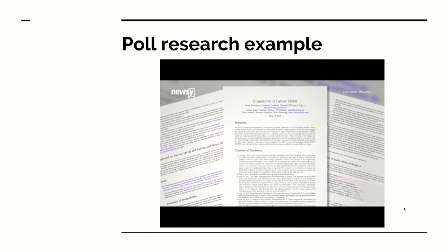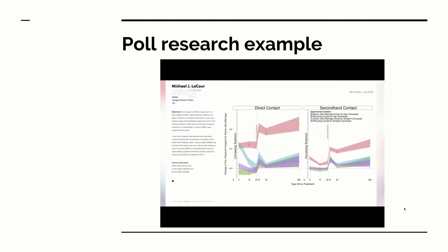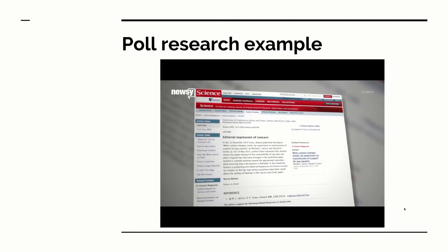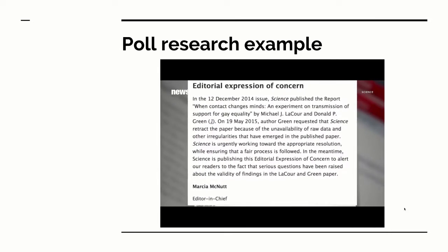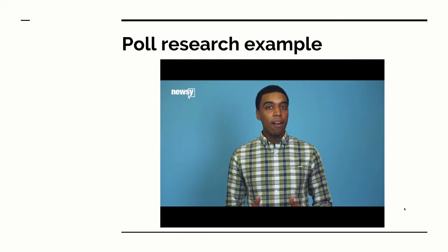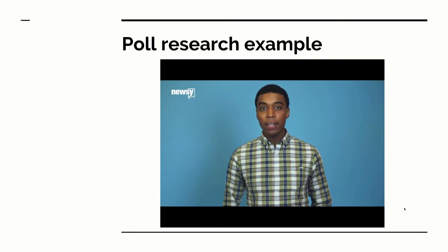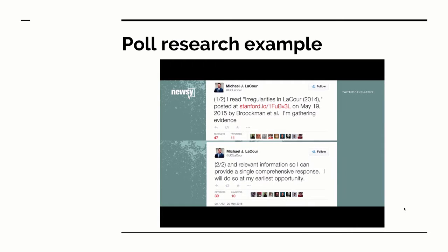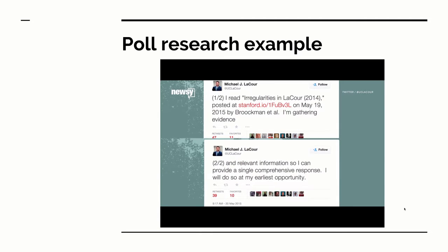Just a few months later, Stanford researchers announced their attempt to replicate the study had failed miserably. They said study author Michael LaCour's data looked suspicious — they couldn't get a response rate close to what LaCour had reported, let alone change as many people's minds. Science issued an expression of concern and began investigating, eventually issuing a retraction. Throughout the controversy, LaCour said he could back up his findings and that he stood by them.